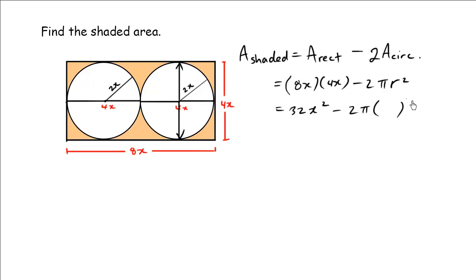And what is our r value? The radius here happens to be 2x, so what we have here is 32x² minus 2π times this result. Now, 2x times 2x is 4x². Remember that we also need to square the coefficient itself: 2 times 2 is 4, x times x is x².